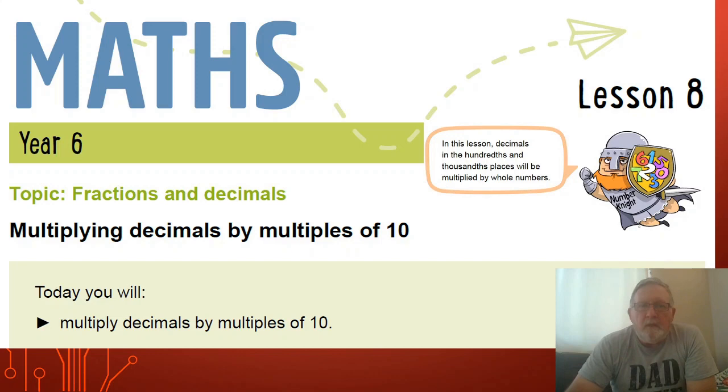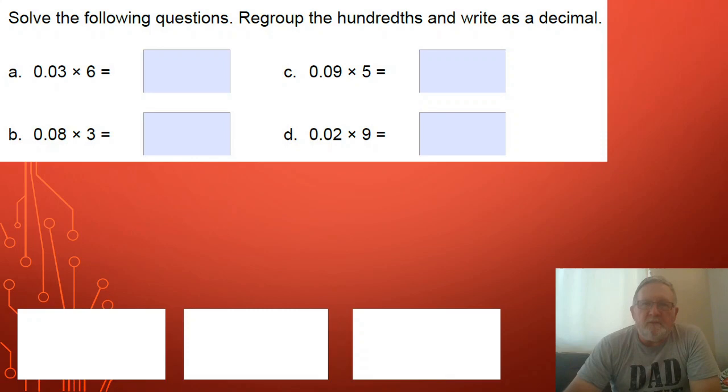Alright, okay, today we're looking at multiplying decimals by multiples of 10. It's a little bit harder than yesterday because we only multiplied by a single digit. Today we're going to look at how to combine the idea of our place value understandings and multiplication all into one.